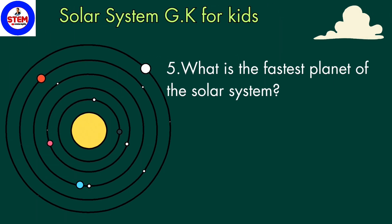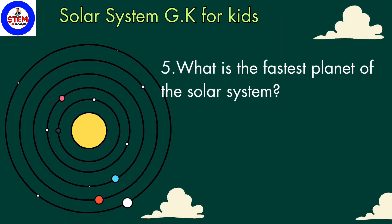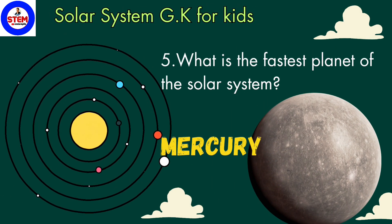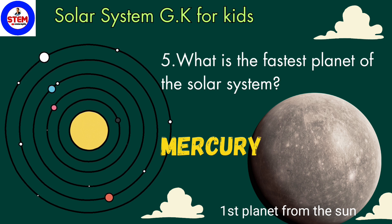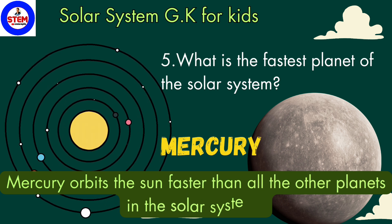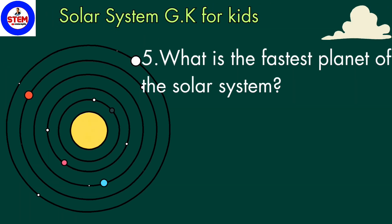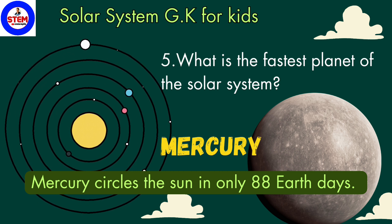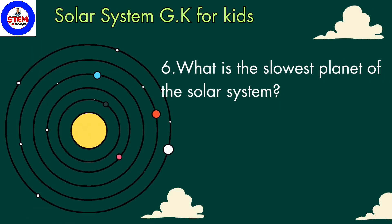Fifth question: what is the fastest planet of the solar system? Mercury is the fastest planet. In order, Mercury is the first and nearest planet to the sun, meaning it orbits the sun faster than all other planets and completes one full revolution faster than any other planet. Do you know, children, Mercury circles the sun in only 88 Earth days.